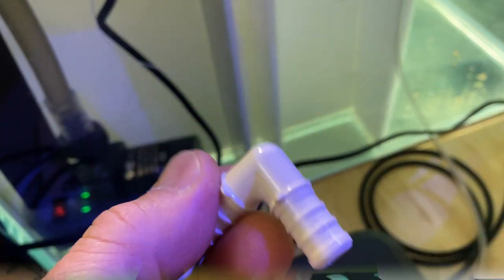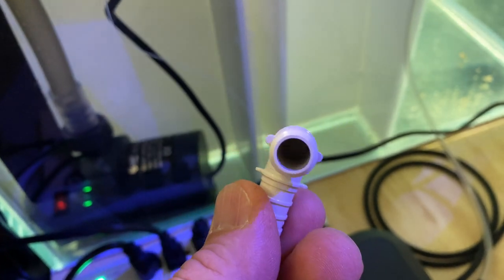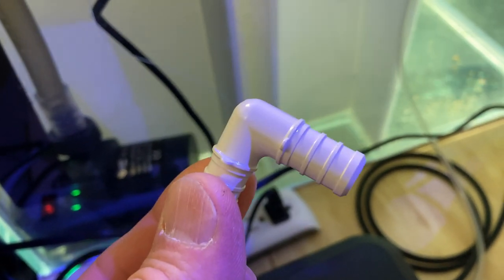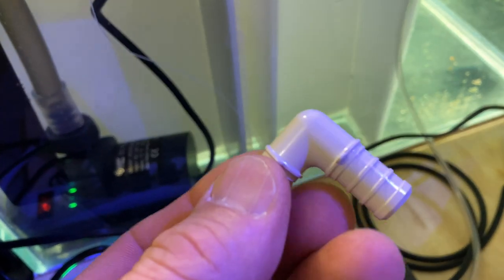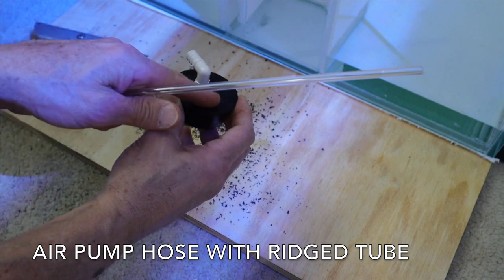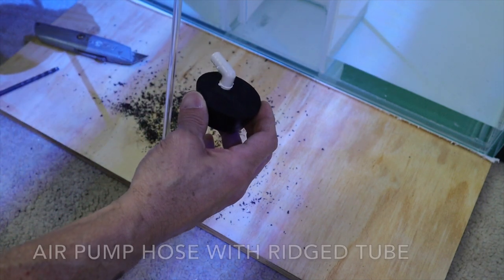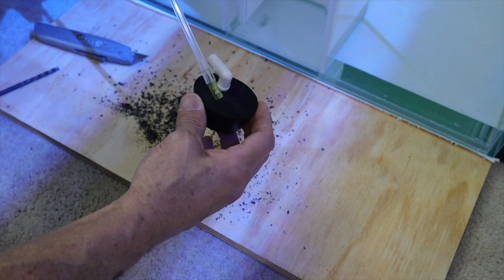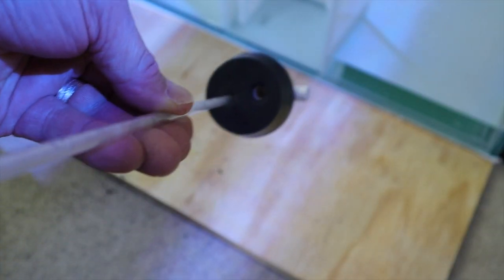This is a pex elbow half inch, I'm going to use this in the top of the skimmer for the skimate collection hose. I'm going to drill a small hole for this. This is going to get a stone on the end, see what I'm talking about.